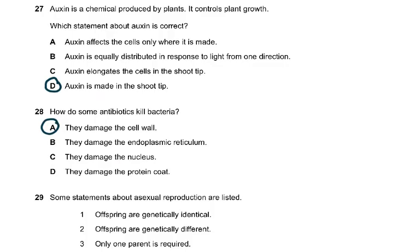Question 27: auxin is a chemical produced by plants that controls plant growth. The side away from the light has more auxin, so the cells elongate and the shoot grows towards the light. Auxin diffuses down from the shoot tip — auxin is made in the shoot tip — so option D was correct. Please revise this if you are not clear on it.